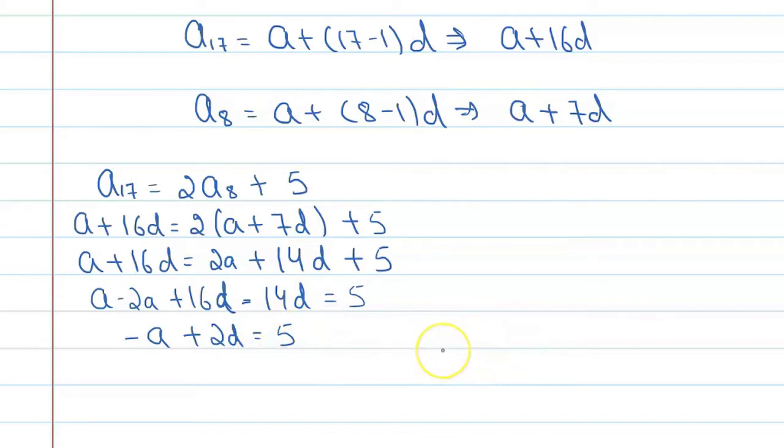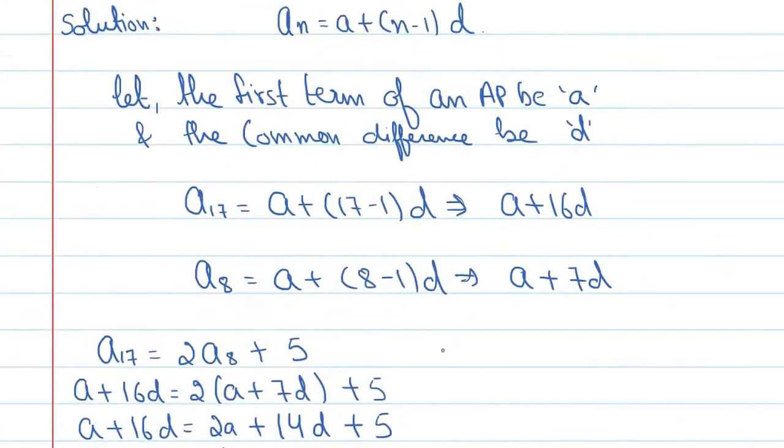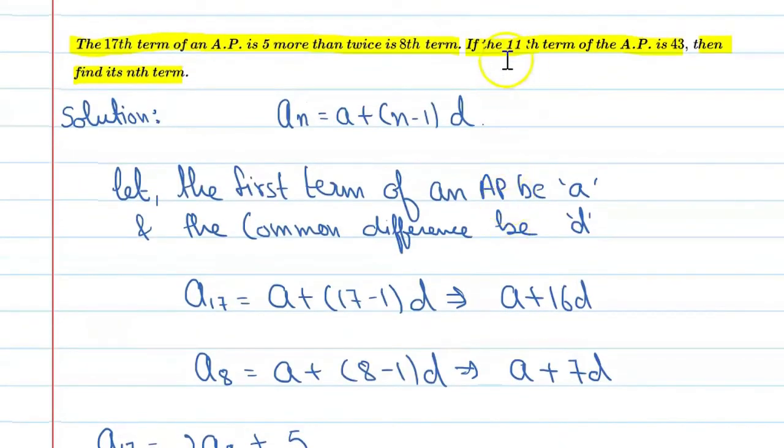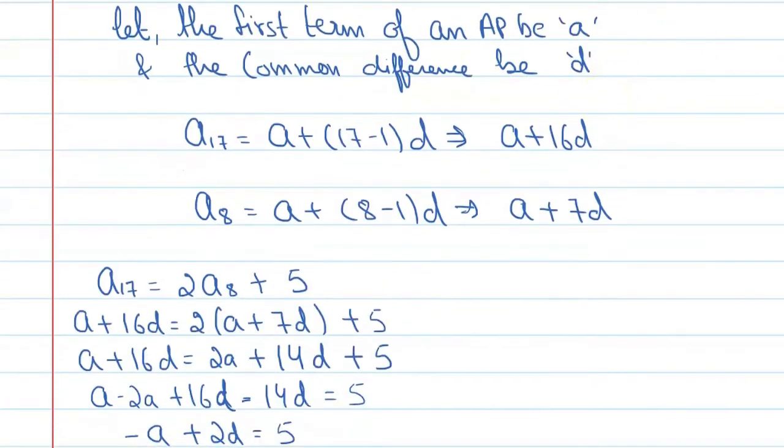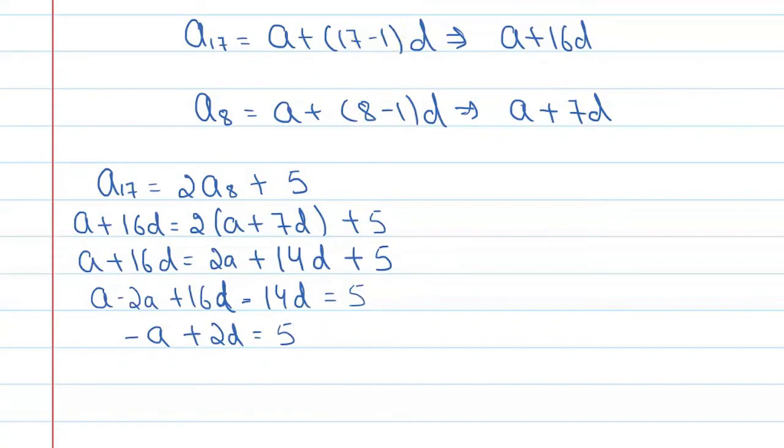Similarly, the next form, A11 term of an AP is 43. Let's see how we can say. Here we can say A11 is equal to 43.